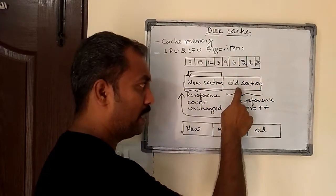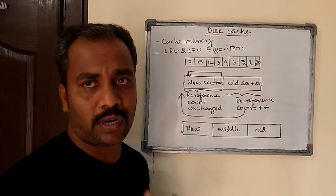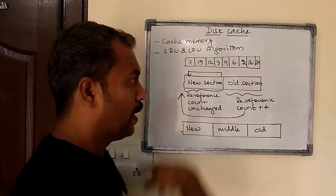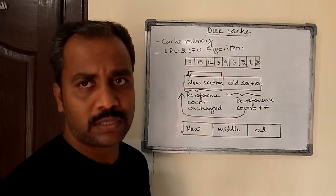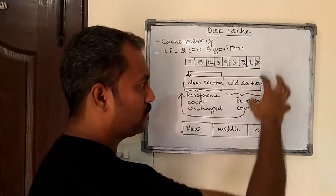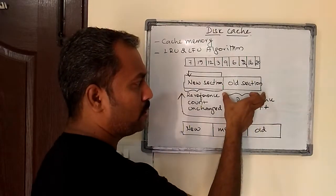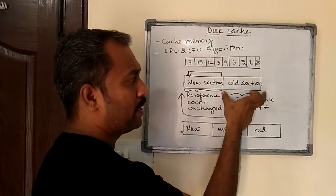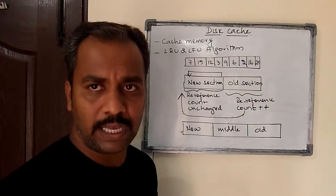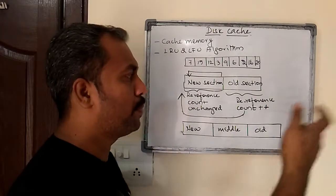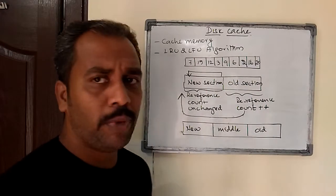Whenever a page has reached the VOD section, that is the moment at which, if it is referenced again, the count of that particular sector will be increased. So whenever a replacement is required — a new page has to come in — out of all the pages, we have to find one to replace. At that point, we only consider the sectors available in the VOD section, and whichever sector has the lowest frequency will be selected and replaced.